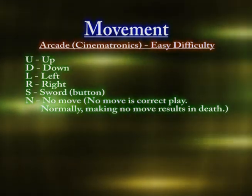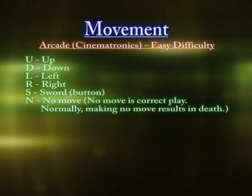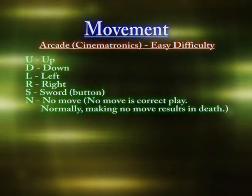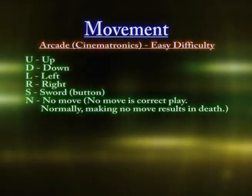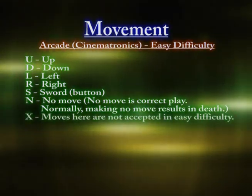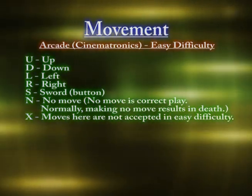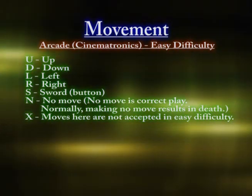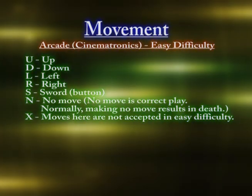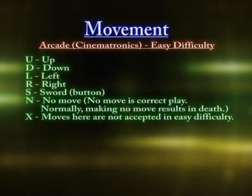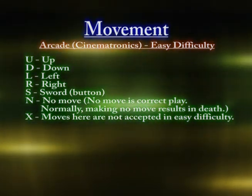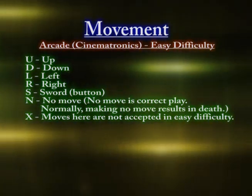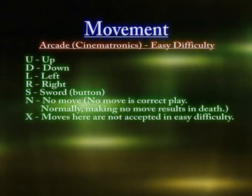Sometimes no move is the correct move, so I'll put an N there. Normally if you don't do anything you get killed, but there are a few situations where doing nothing is the proper thing to do — so N is no move. In easy setting, there are some moves that aren't there, whereas in hard setting there are. I put an X for easy setting. For example, if hard setting had a left and easy setting had nothing, it would be an X under easy — meaning in easy you do nothing, but in hard you do L for left.